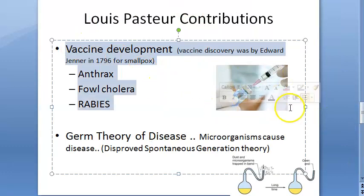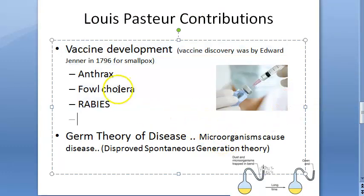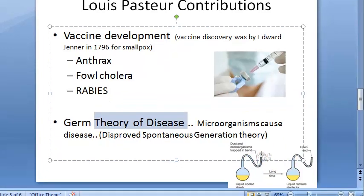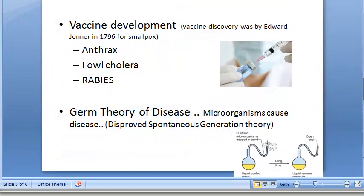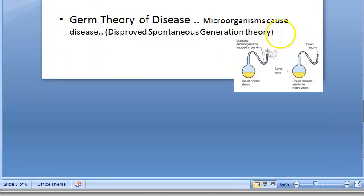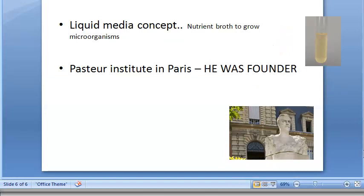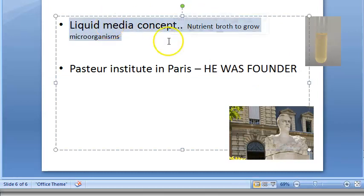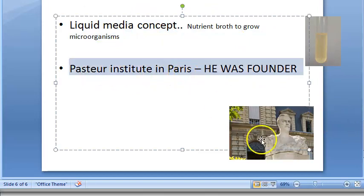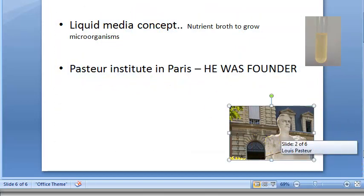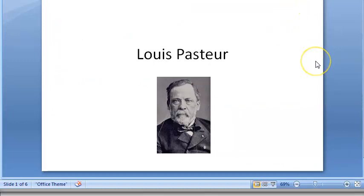Pasteur developed vaccines for anthrax, rabies, and fowl cholera — remember especially rabies and anthrax. He proposed the germ theory of disease, stating diseases come from germs, not spontaneous generation. He introduced the liquid media concept with nutrient broth, and he founded the Pasteur Institute in Paris.